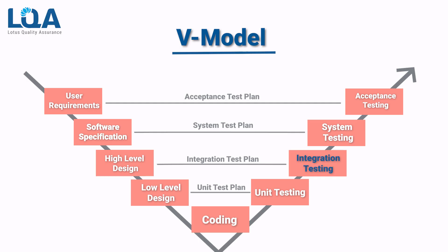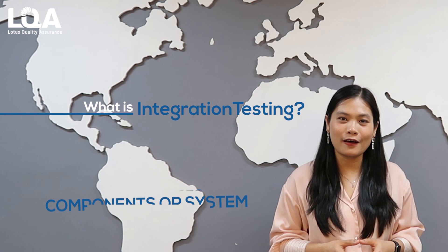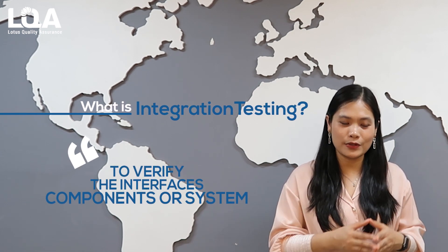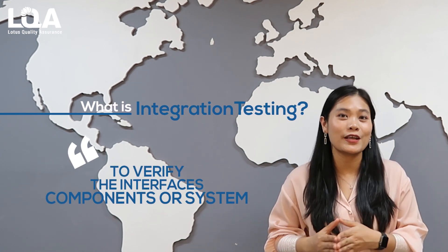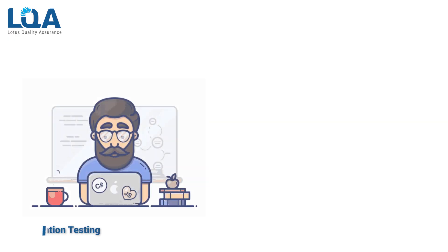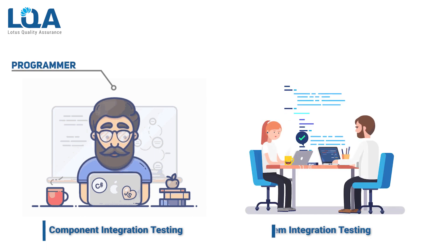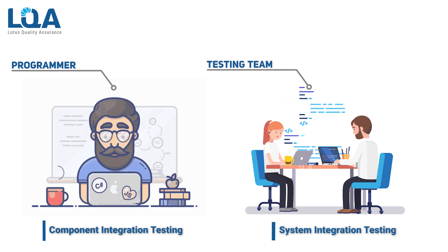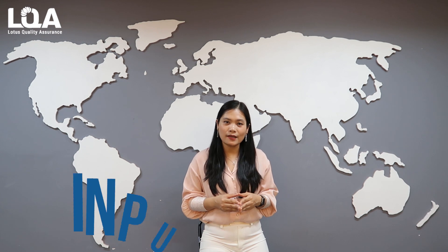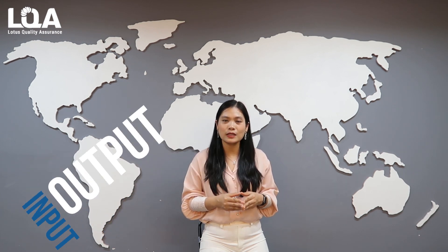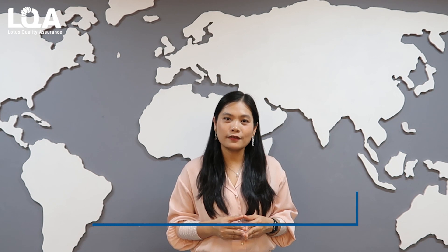After finishing unit testing, we go to integration testing. Integration testing verifies the functional and non-functional behavior of the interfaces between components or system integration. There are two types: component integration testing, done by the programmer, and system integration testing, which may be done by an independent testing team. Depending on the context, the input, output, and system under test may differ, but the objective is the same — focusing on integration between the components of the system.